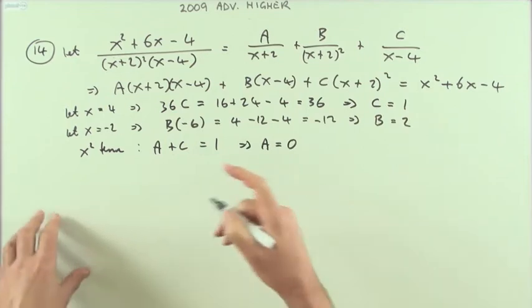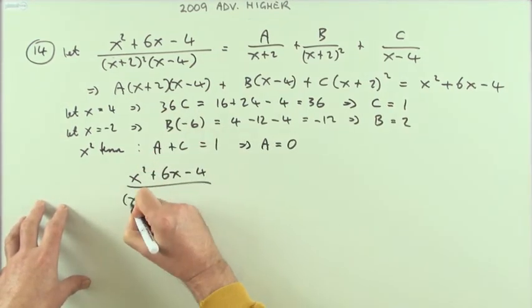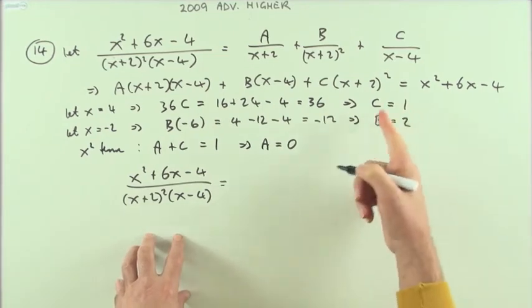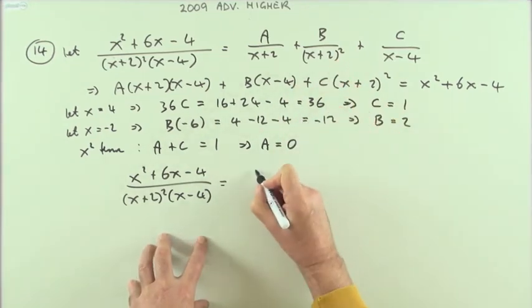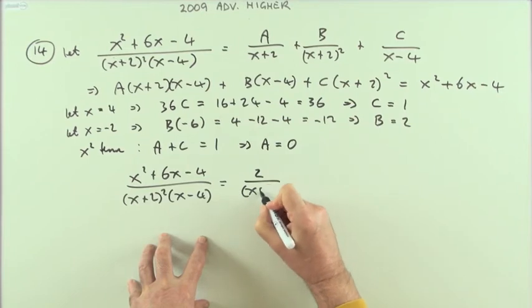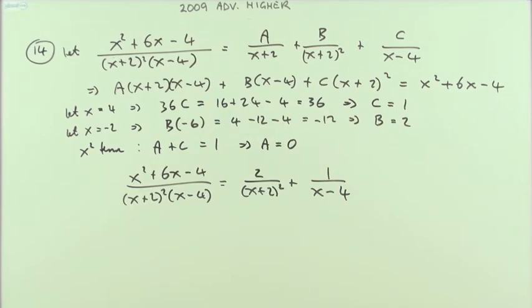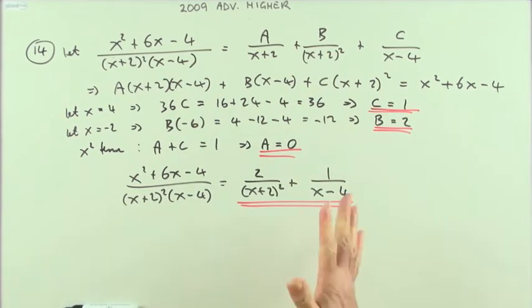Now I already know that c is 1, that means that A must equal 0. So it was handier doing this because I've only got two parts to it. Then, that means the expression here turns into just... A was gone, so it turns into just 2/(x+2)² + 1/(x-4).